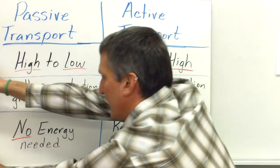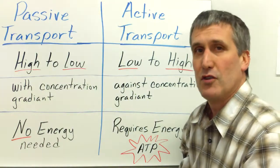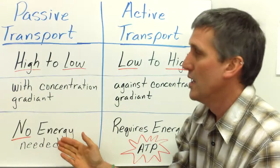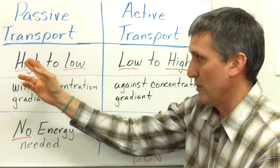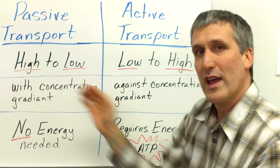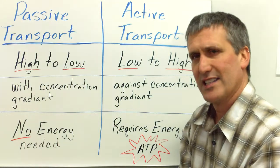So there's basically two main types of transport. This is going to be a basic introduction to passive transport, which is movement of molecules from high concentration to low concentration. This is called with the concentration gradient. When you go from high to low, you're going with the concentration gradient.